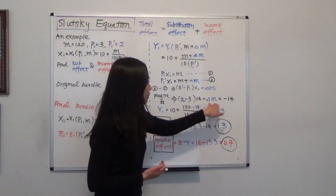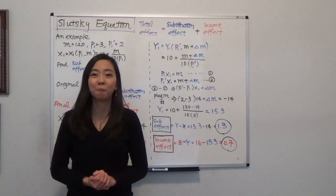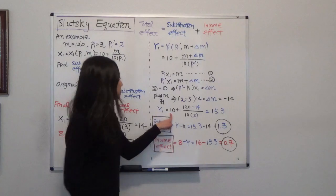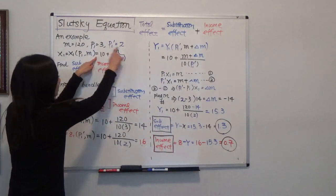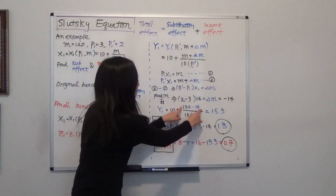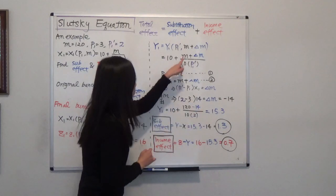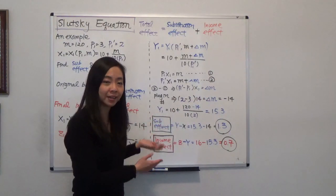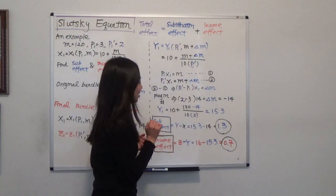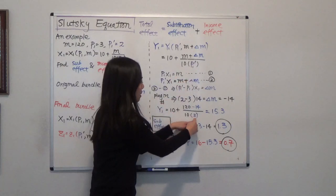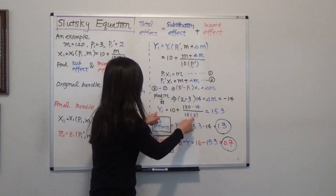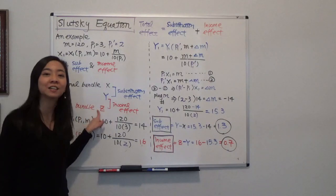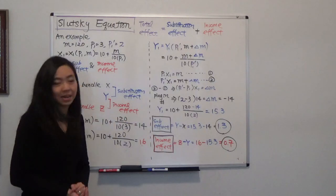Now that delta M equals negative 14, I can calculate bundle Y. Y1 — we only have one good, which is milk — equals 10 plus the new income, divided by 10 times P1'. The new income is 120 minus 14 (the money taken away) = 106, and P1' is $2. So Y = 10 + 106 divided by (10 times 2) = 15.3. Now I have X, Y, and Z, so I can calculate the substitution effect and income effect.